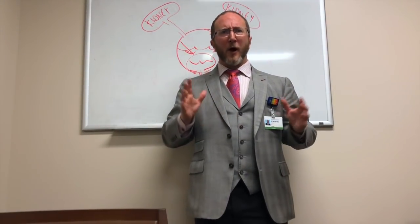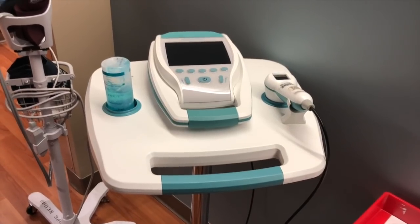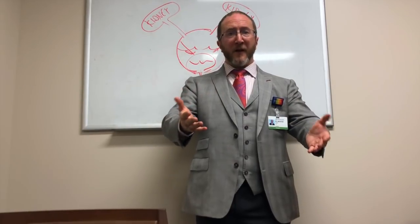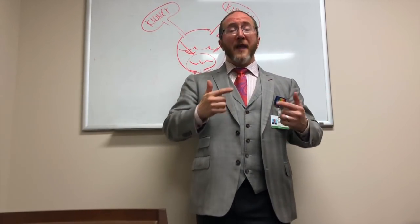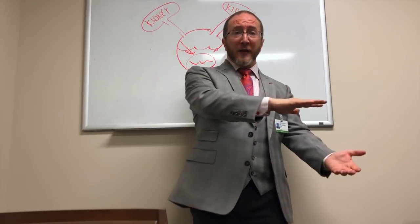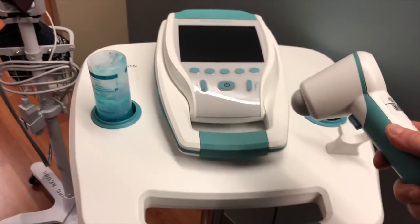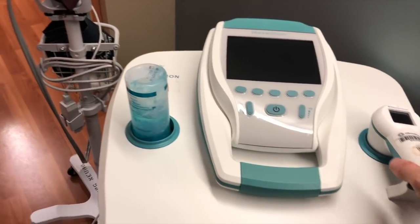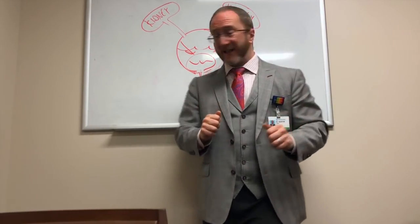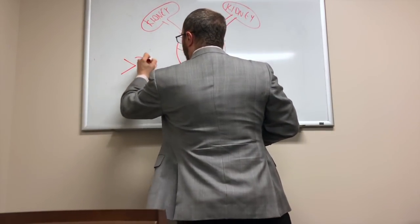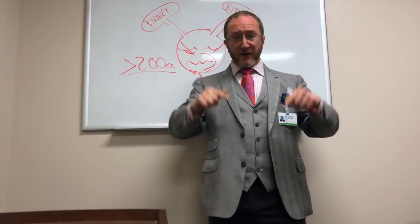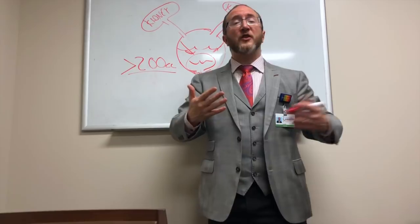Another tool we use at the MS Center is a bladder ultrasound. This is done on the surface of the belly — completely non-invasive. Step one: we measure the amount of urine in the bladder before you empty — that's the pre-void. Then we have the person urinate into a container we call a hat — it's plastic, shaped like an upside-down hat. We measure that urine, then do a second ultrasound — a post-void residual — to see how much remained. If we have more than 200 cc's remaining, that suggests they're retaining urine and have a problem with the bladder neck. If they have less than 200 cc's, that suggests more of a storage problem.